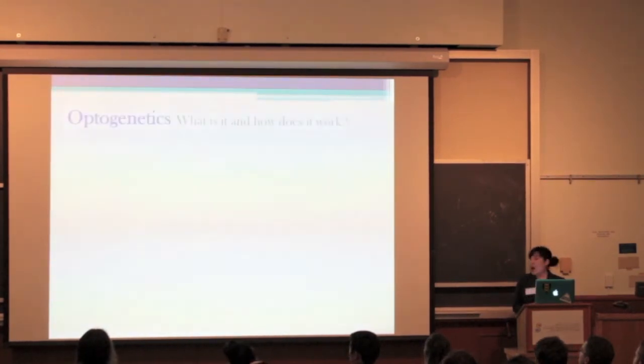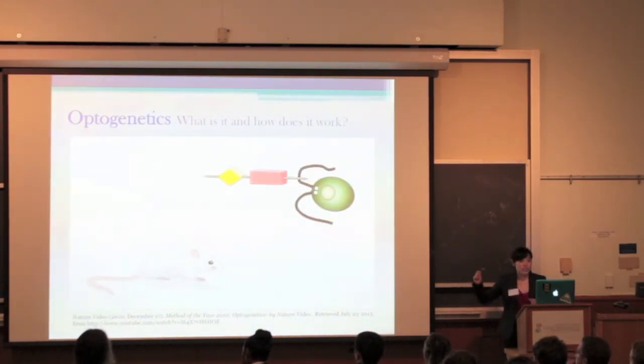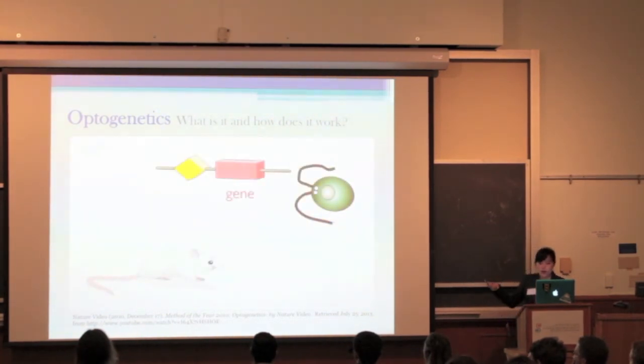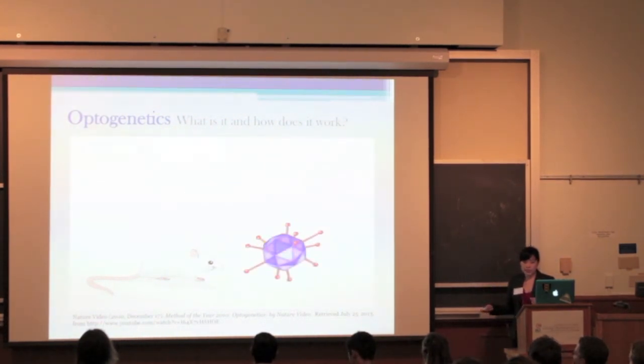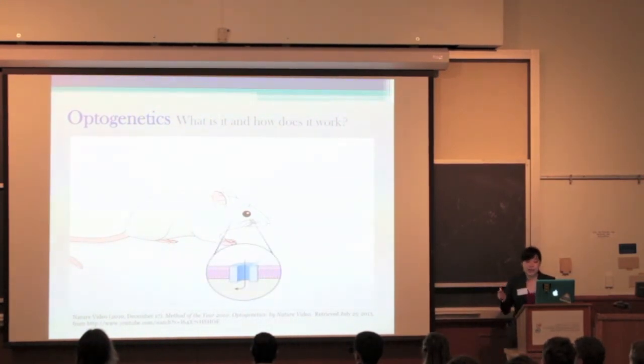Now, the third method that we can use is optogenetics. What is it, and how does it work? Well, scientists discovered a protein in algae, which responds to light, as you can see here in this video. They have since found the gene that codes for that protein, called opsin, which is a light-sensitive ion channel. When stimulated, the channel opens, which fires an action potential. The promoter then drives expression of that gene. The construct is then inserted into a virus, which replicates, and is then injected into the area of interest. In our case, the basolateral amygdala.